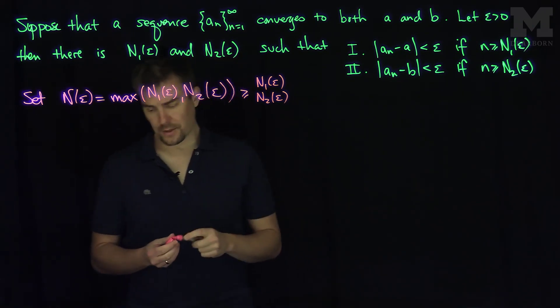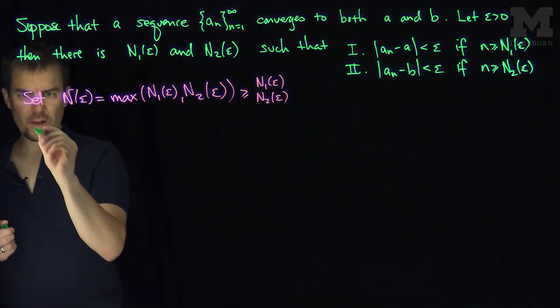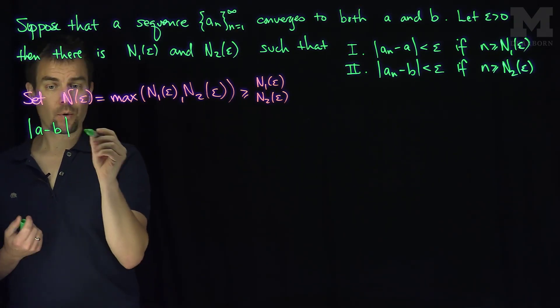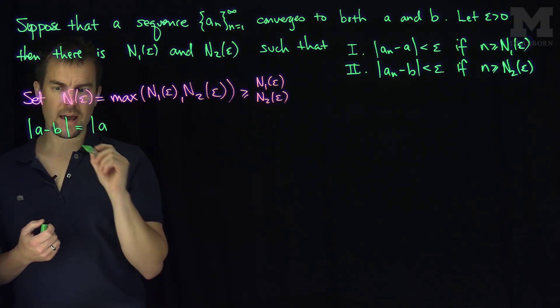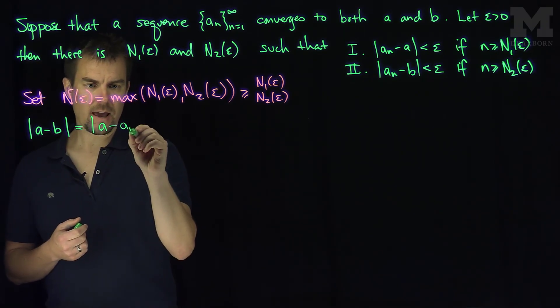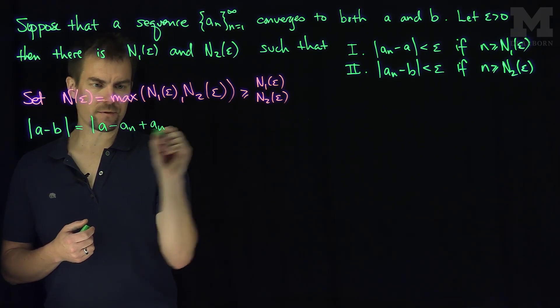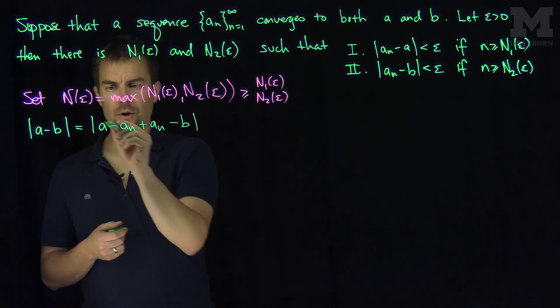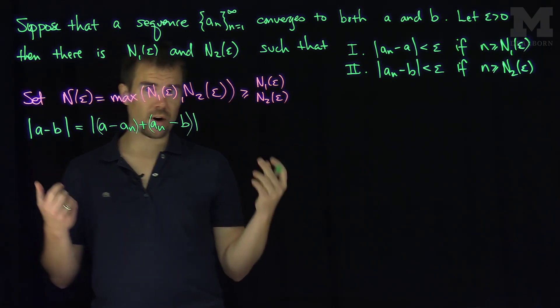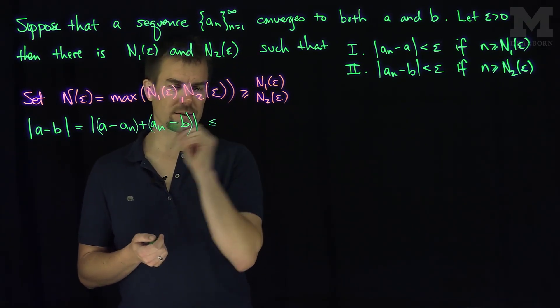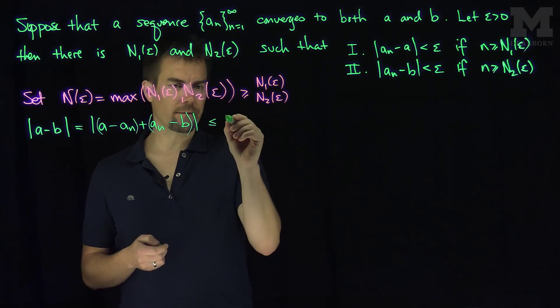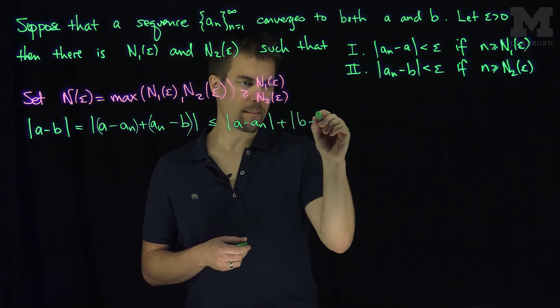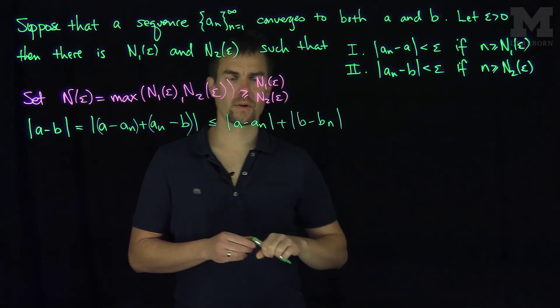So now, let's look at the absolute value of a minus b. I'm going to artificially add in zero here, so a - a_n + a_n - b. Now I'll group these two terms together and use the triangle inequality. So this is less than or equal to |a - a_n| plus |a_n - b|.